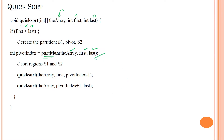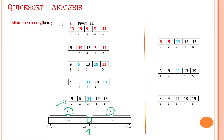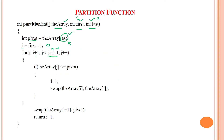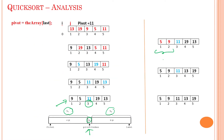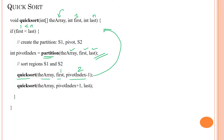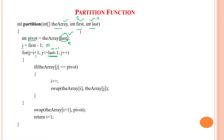We call quickSort recursively: first on the left subarray from index 1 to pivot_index minus 1. The pivot index is 3, so we call with indices 1 to 2. Again, the pivot element will be array[last], which is array[2]. We have the sublist with elements at indices 1 and 2, giving us the elements 5 and 9 in sublist 1.